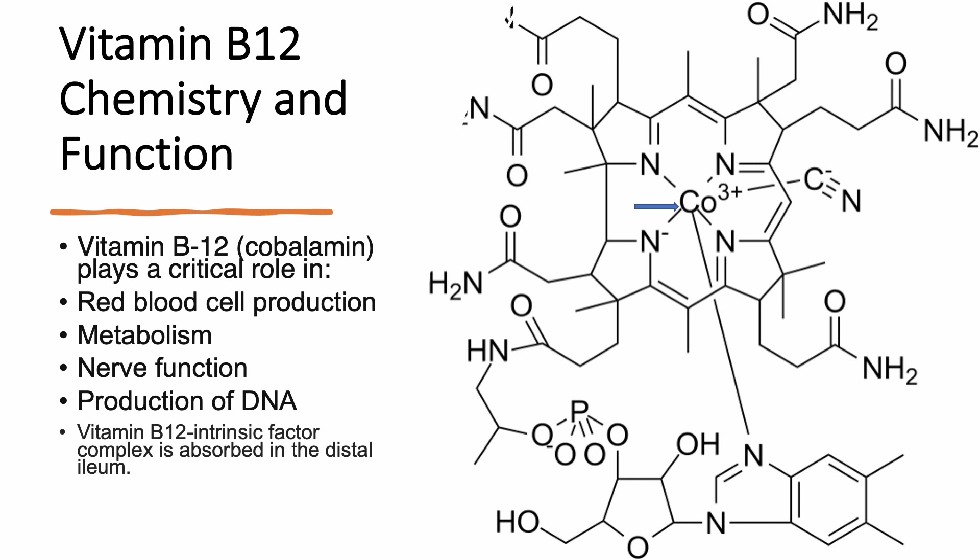Vitamin B12 plays a critical role in red blood cell production, metabolism, nerve function, and production of DNA. In order to absorb vitamin B12, the stomach will have to make a factor called intrinsic factor, which is going to bind to vitamin B12, and this complex is going to be absorbed in the last part of the small intestine known as the ileum.